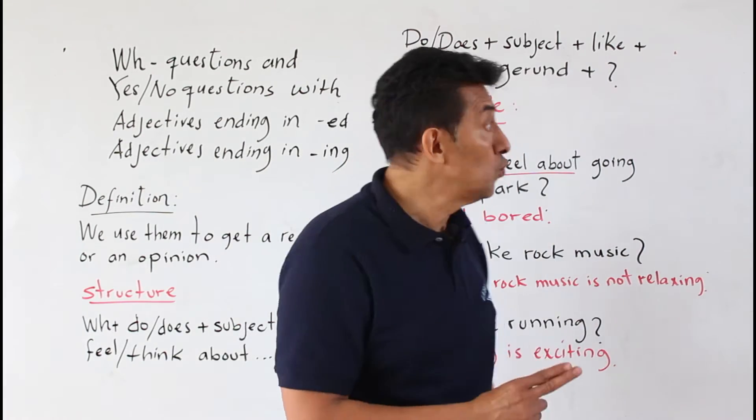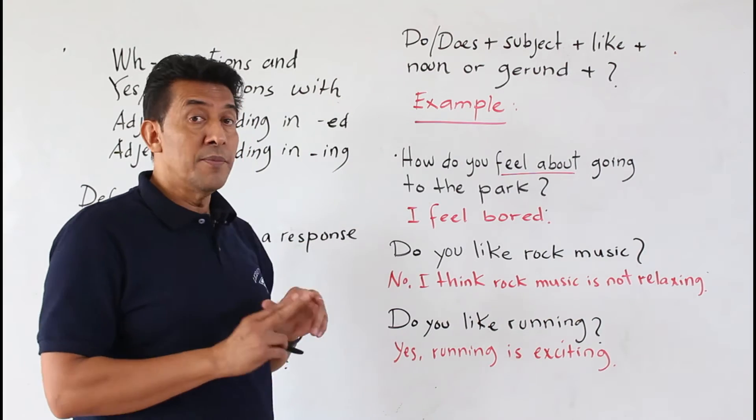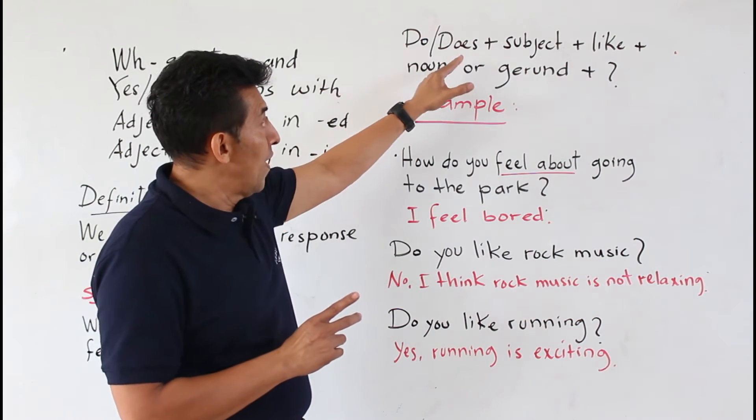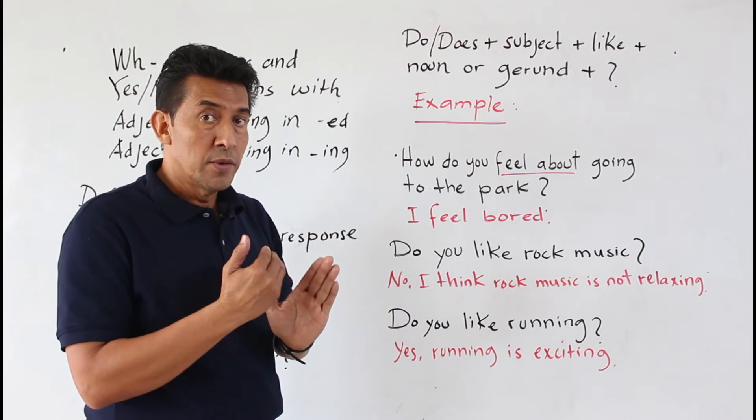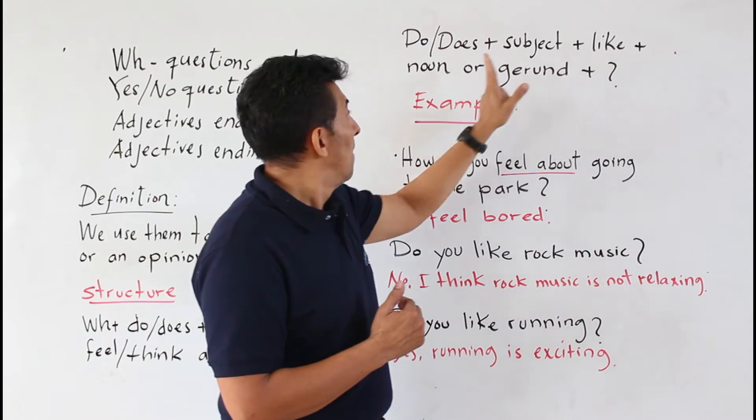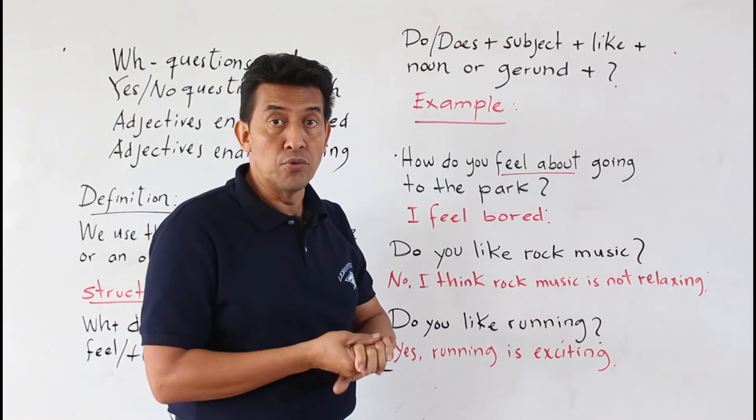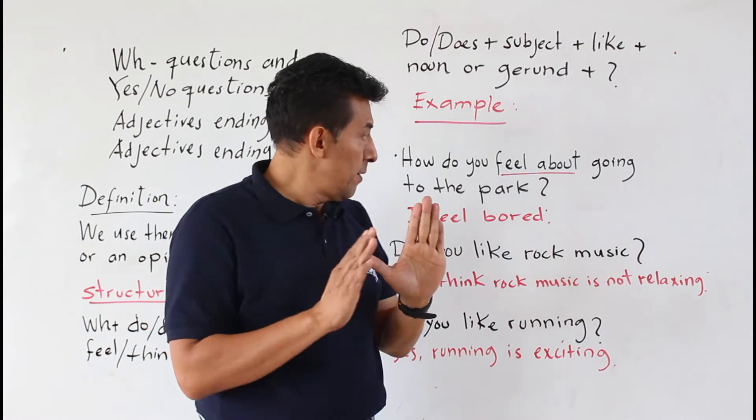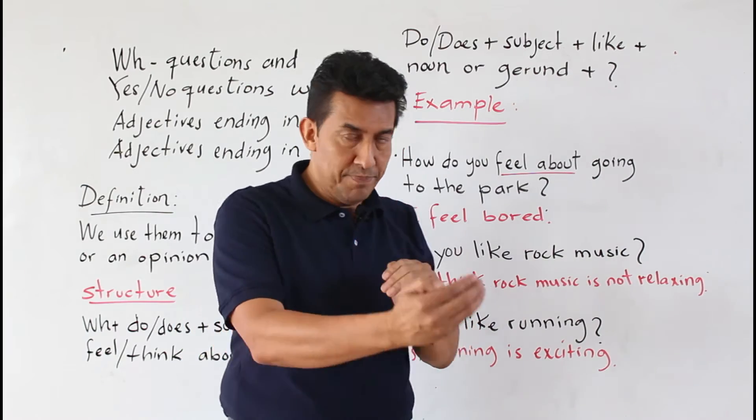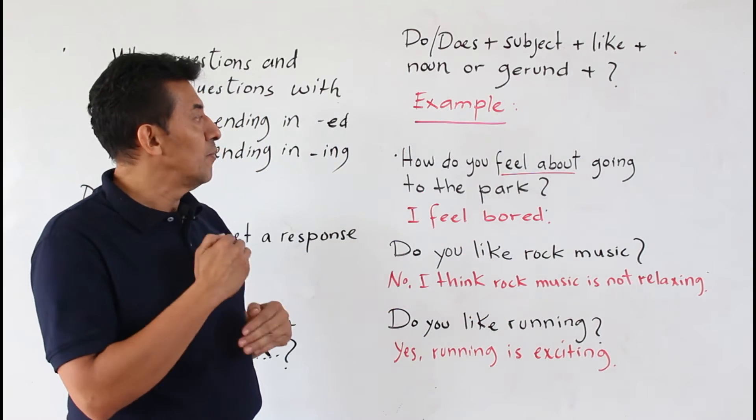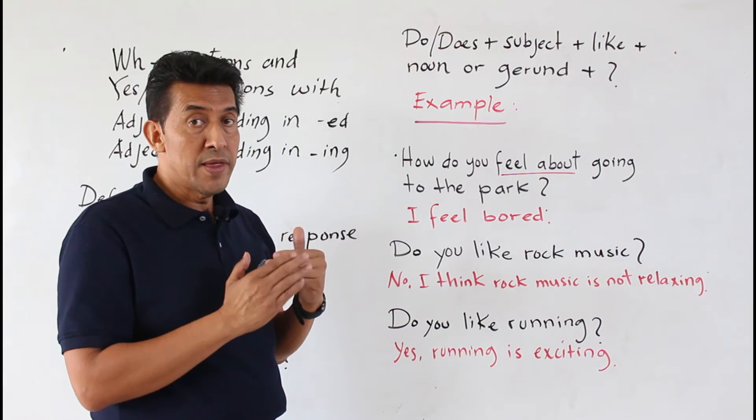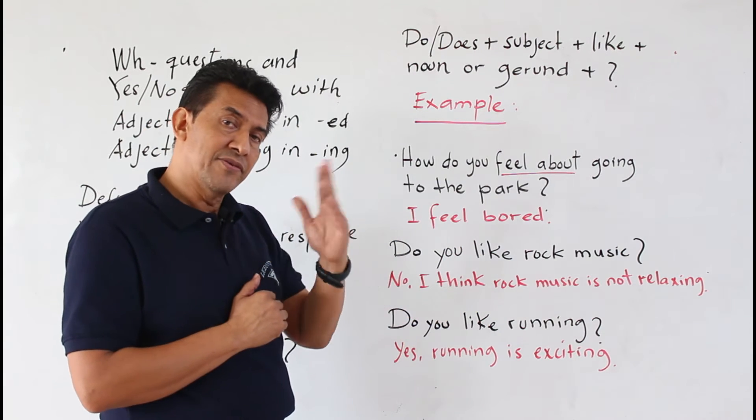La segunda estructura que vamos a ver, pues vamos a una yes-no-question. Do o does igual, ellos van a depender del sujeto, y like, el verbo mag, un sustantivo o un gerundio. Vamos a ver dos ejemplos en donde vamos a expresar, donde vamos a explicar cómo es que yo voy a dar una opinión o una respuesta a ese tipo de preguntas.